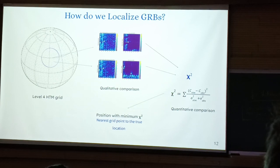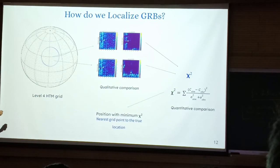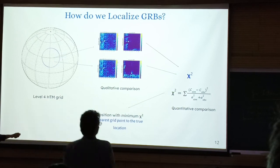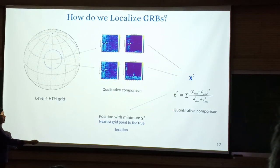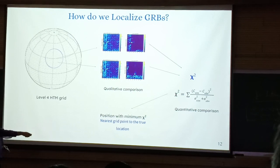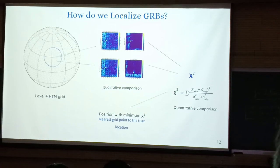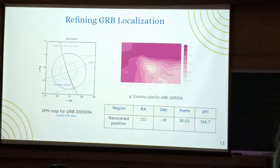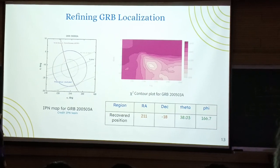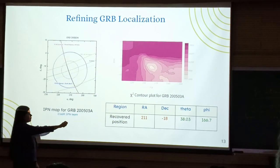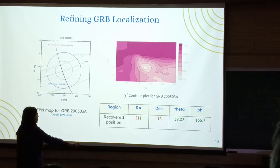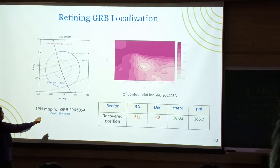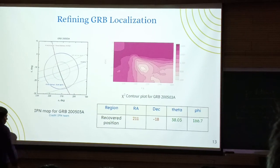For this particular GRB, we did our analysis and obtained a position at RA-Dec, which is approximately lying on the IPN line.